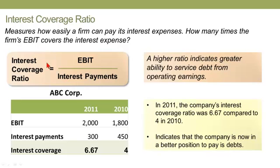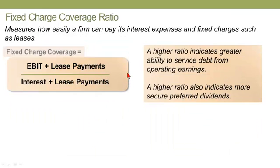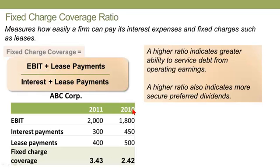The interest coverage ratio may not fully reflect all fixed charges, primarily because there may be operating leases that are not capital leases and therefore won't be capitalized on the balance sheet. The fixed charge coverage ratio attempts to be more comprehensive by adding lease payments into both the numerator and denominator: EBIT plus lease payments divided by interest plus lease payments. This gives a fixed charge coverage of 3.43. We're more precise about total fixed charges because we've now treated operating leases as fixed charges, and directionally we get the same result — the fixed charge ratio has improved, indicating a greater ability to service debt from operating earnings.